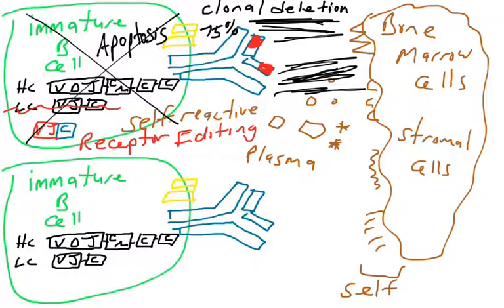This is called clonal deletion. In fact, this happens to about 75% of immature B cells that you generate in your bone marrow every day. About 75% of them have some affinity for your molecules, which means you have to either go back and try to edit the receptors and save them. And if you edit the receptors and you still have reactivity to self molecules, just throw these cells away. They die by apoptosis. And that's okay. It's better than releasing them into the wild and recognizing and attacking our body.